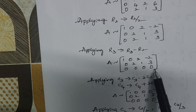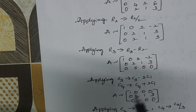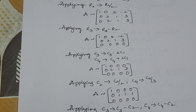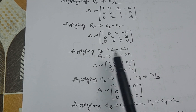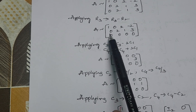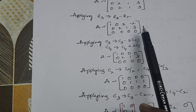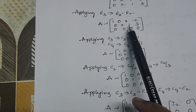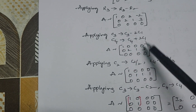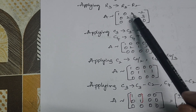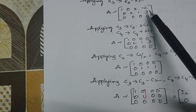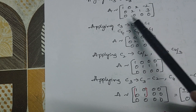Now applying column operations: C3 → C3 - 2·C1 and C4 → C4 + 2·C1. The first two columns remain as they are. For C3 - 2·C1: 2 - 0 = 2, 1 - 2·C1 = 0 (entry becomes 0), and 0 - 0 = 0. For C4 + 2·C1: the entries give -2, then C4 → C4 - 2·C2 + 2·C1 giving 3, and 0 - 0 = 0.